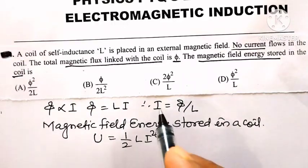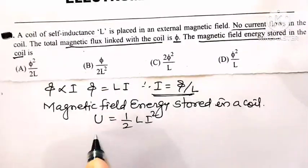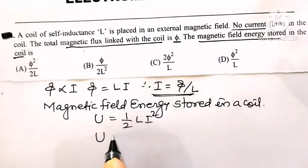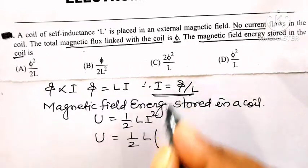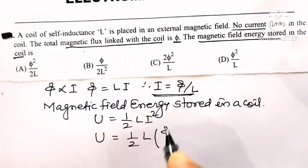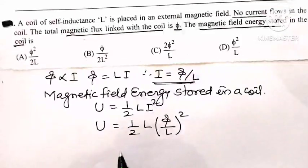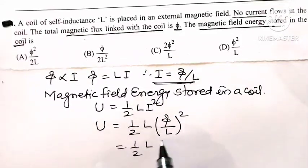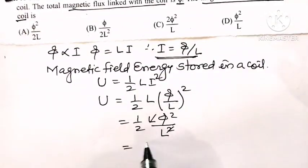Now we know the value of I is equal to phi by L. Therefore, magnetic field energy stored in the coil is half of L into, in place of I, we write phi divided by L, and square it. That is equal to half of L into phi squared divided by L squared, so one L gets cancelled, and it is simply phi squared divided by 2L.